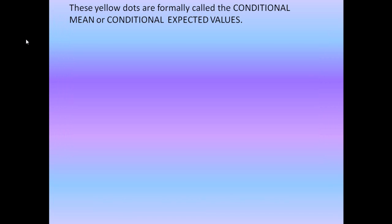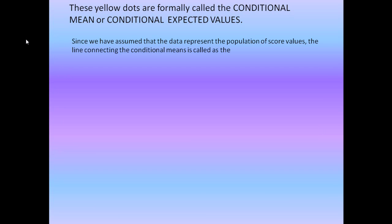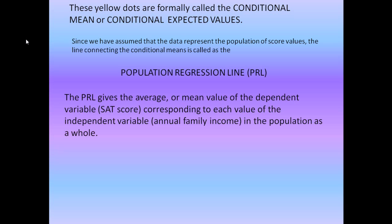These yellow dots are formally called the conditional mean or conditional expected values. Since we have assumed that this data set represents the entire population of score values, the line connecting the conditional means is called the population regression line, in short PRL. So the PRL gives us the average or the mean value of the dependent variable, the SAT score, corresponding to each value of the independent variable, the annual family income, in the population as a whole.